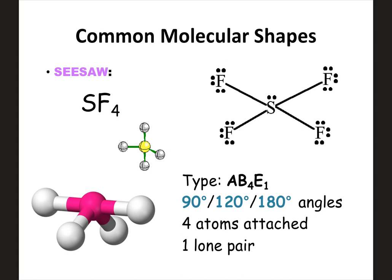Seesaw is another new shape for AP. We still have four attached, but now one lone pair on the center atom. Four attached to the center, one lone pair on the center — that makes the shape seesaw. It's called seesaw because it kind of looks like a seesaw. It has multiple bond angles depending on which angle you're looking at, so the bond angles aren't as critical, but know that four attached with one lone pair gives you seesaw.